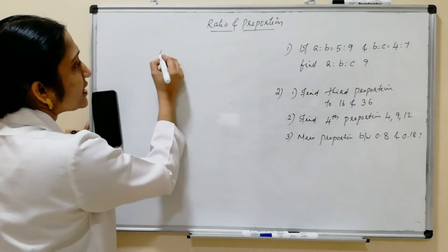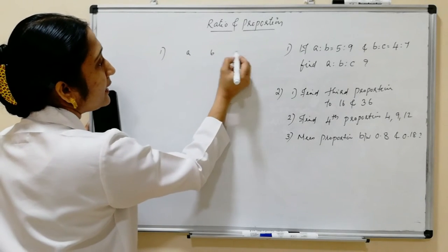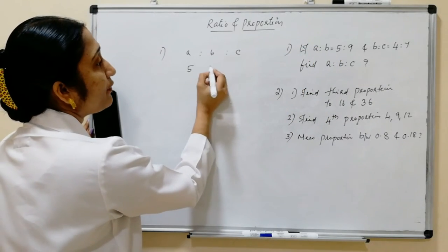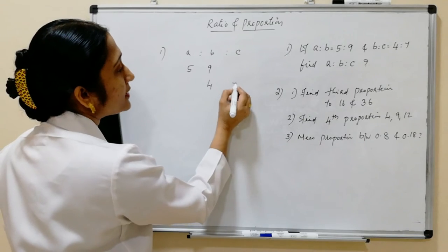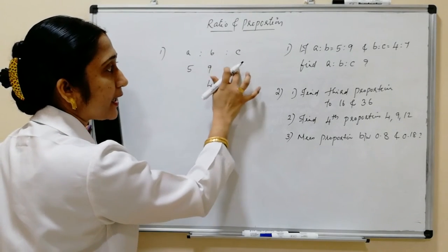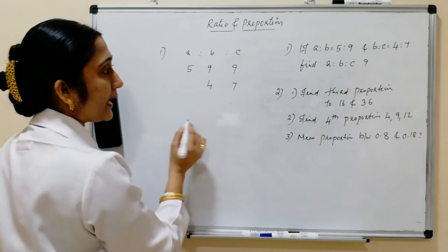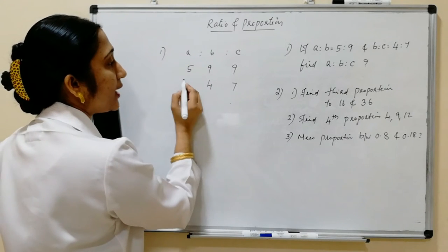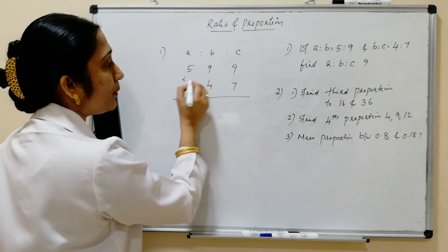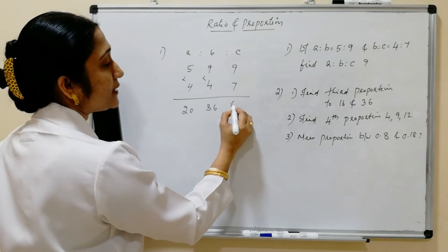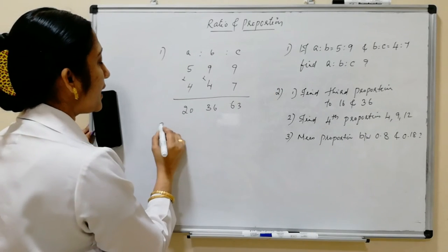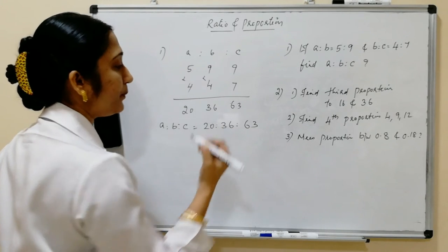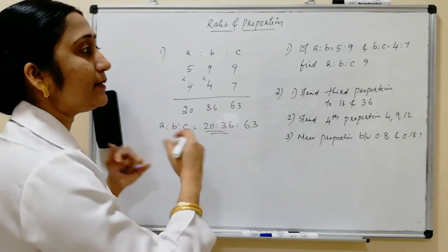To find A:B:C, write the values as 5, 9 and 4, 7. Since B appears in both ratios, match it: multiply the first ratio by 4 and the second by 9. So A:B:C = 5×4 : 9×4 : 9×7 = 20:36:63. This is the compound ratio result.